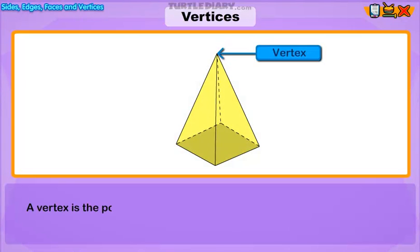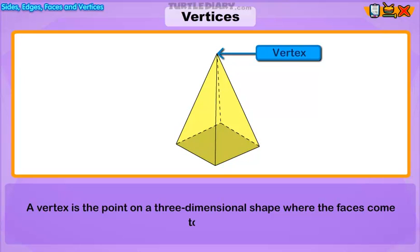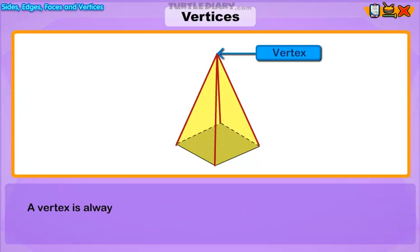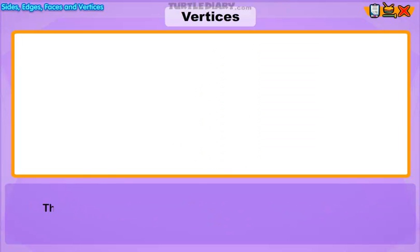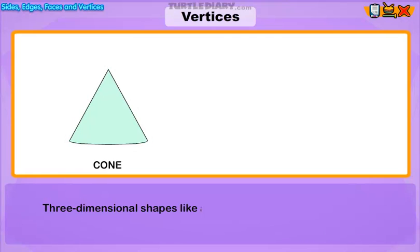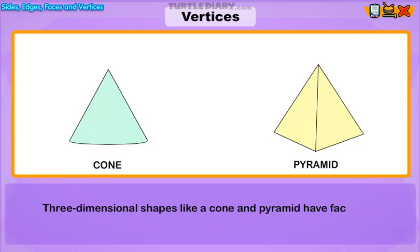A vertex is the point on a three-dimensional shape where the faces come together. It is a point where two or more straight lines meet. A vertex is always sharp as multiple edges meet here to give an object a defined shape. Three-dimensional shapes like a cone and pyramid have faces that meet at a point.